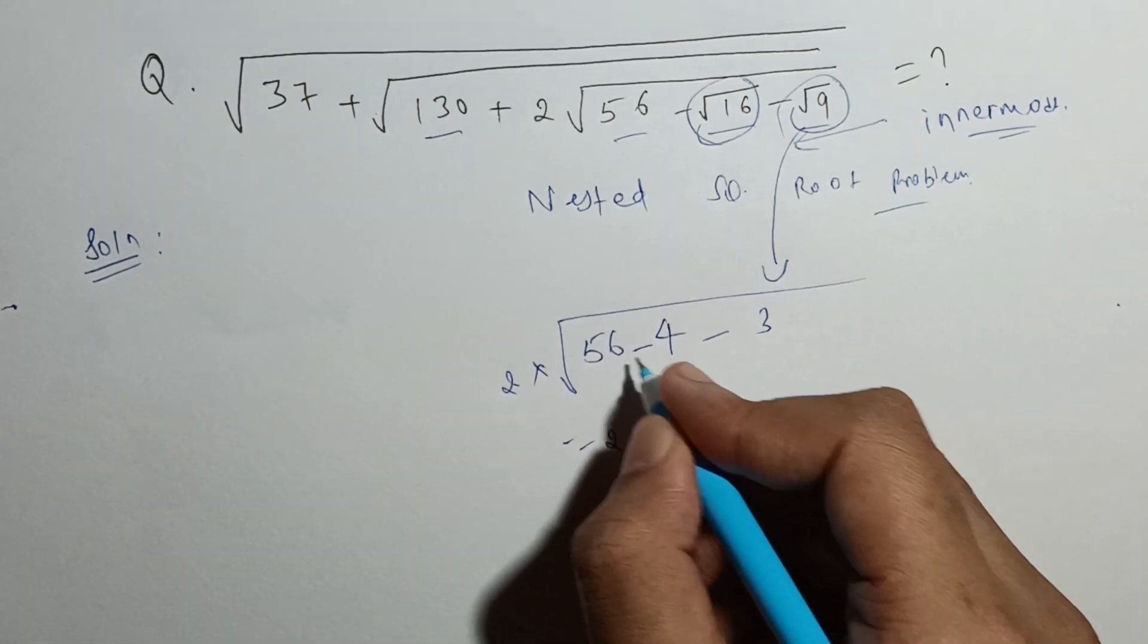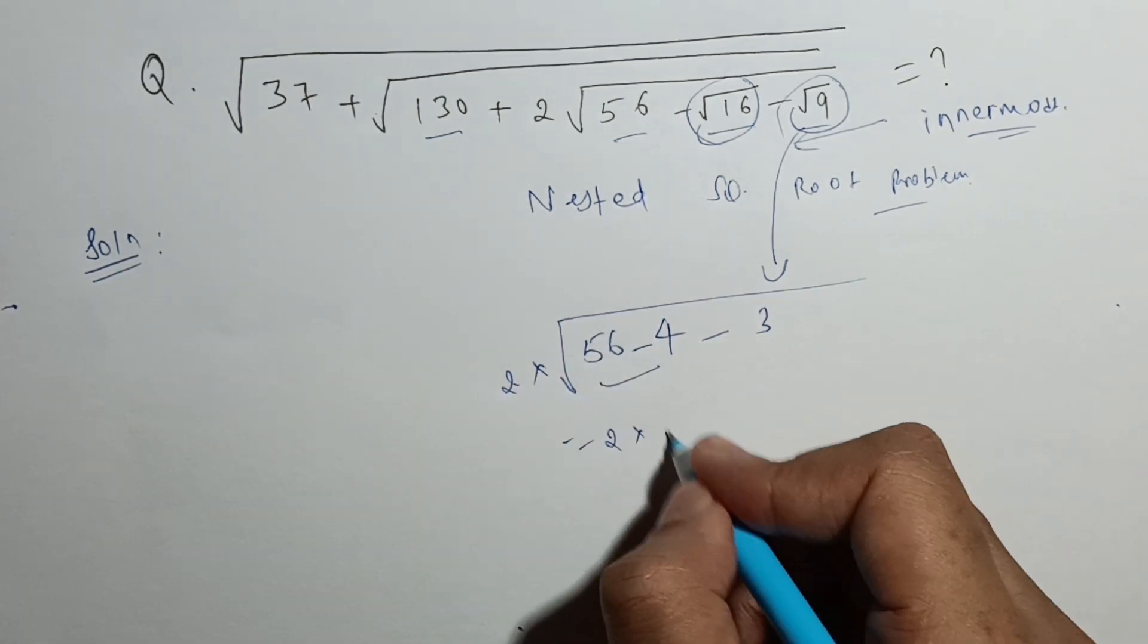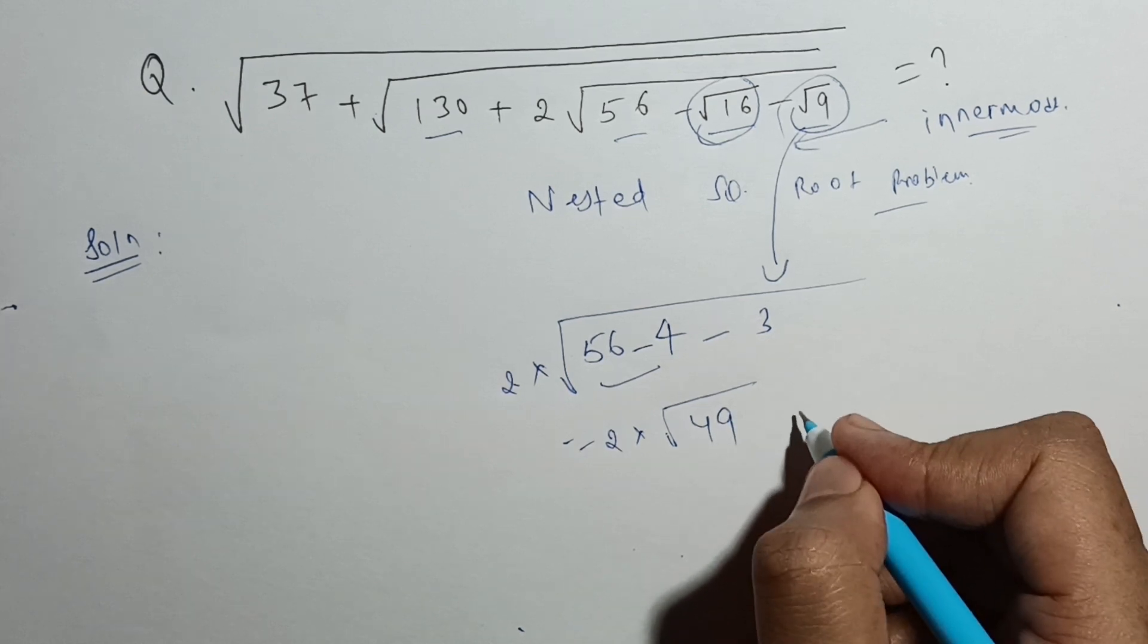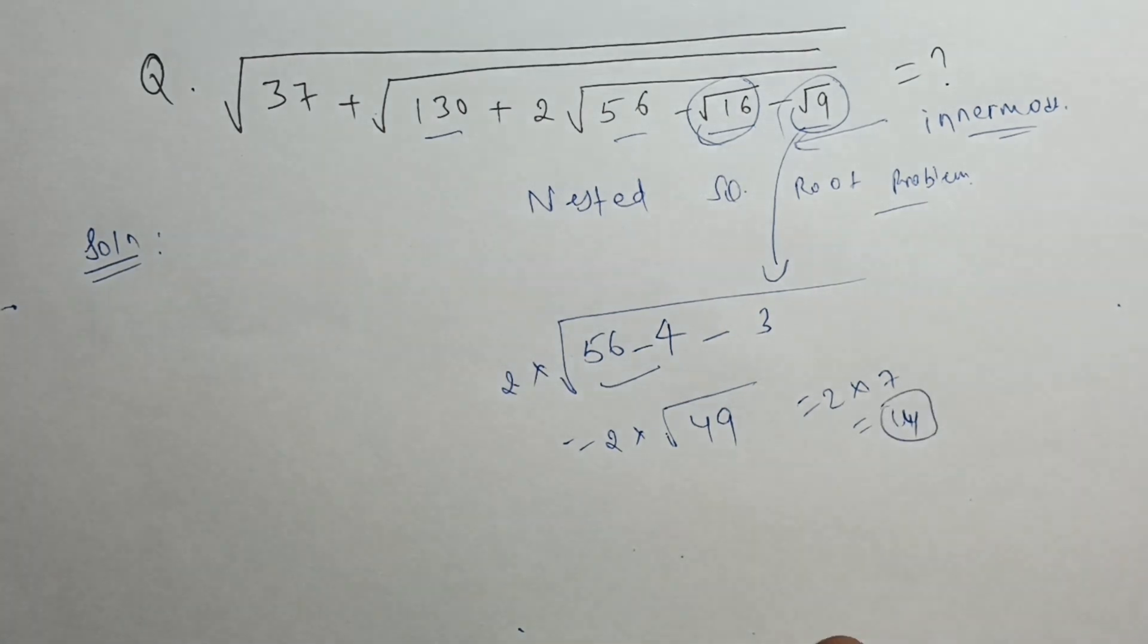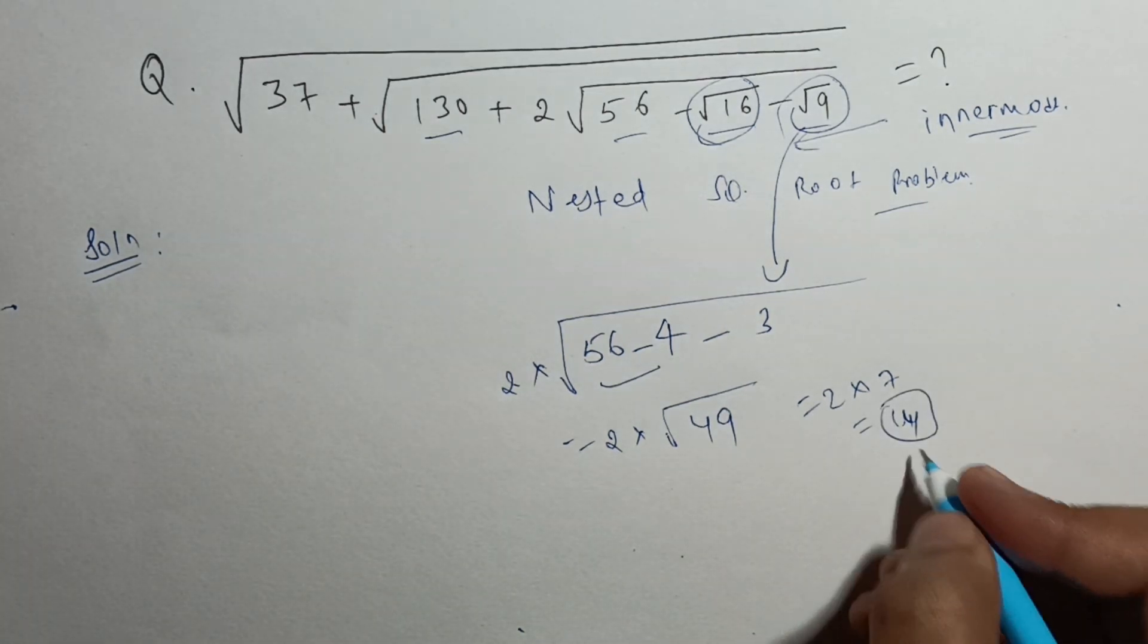This will give me 2. This will be 52 minus 3, which equals 49. So this will be 2 times root 49, which is 7, so 14.